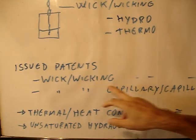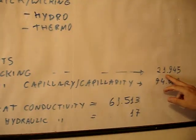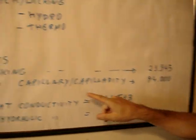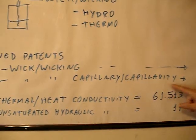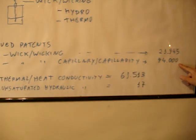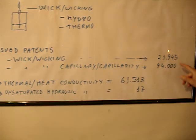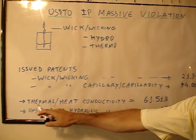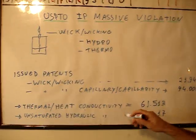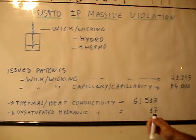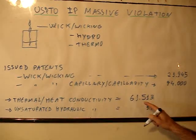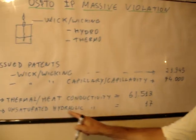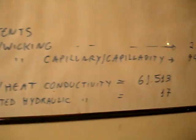The USPTO has issued 21,945 patents on wick and wicking. If you combine with capillary or capillarity it goes to 94,000 patents. For thermal and heat conductivity — how heat is conducted — there are 61,513 patents. But if you go to unsaturated hydraulic conductivity, you have only 17 patents.